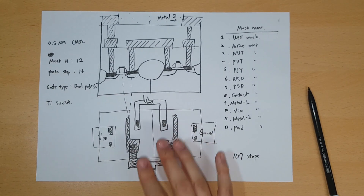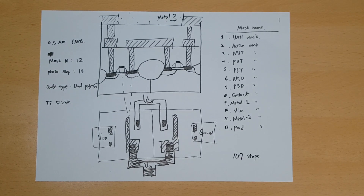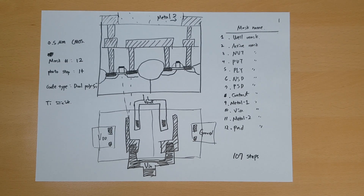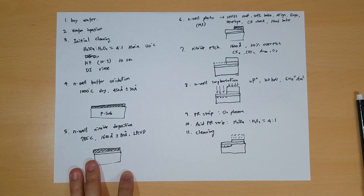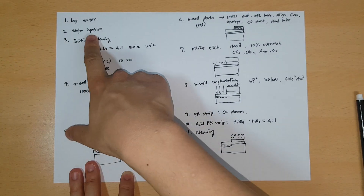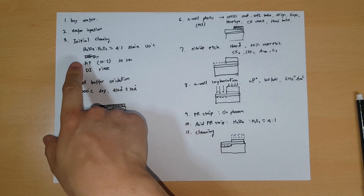The video would be very long if I explained all 107 steps, so this video will only cover about 20 to 40 steps. Let's go to step one. The first step is: you buy a wafer — very simple. You will not make the wafer yourself; you buy it from a company that provides wafers. Step two is wafer inspection — I think I made a video about that in the cleaning section, so you can watch that.